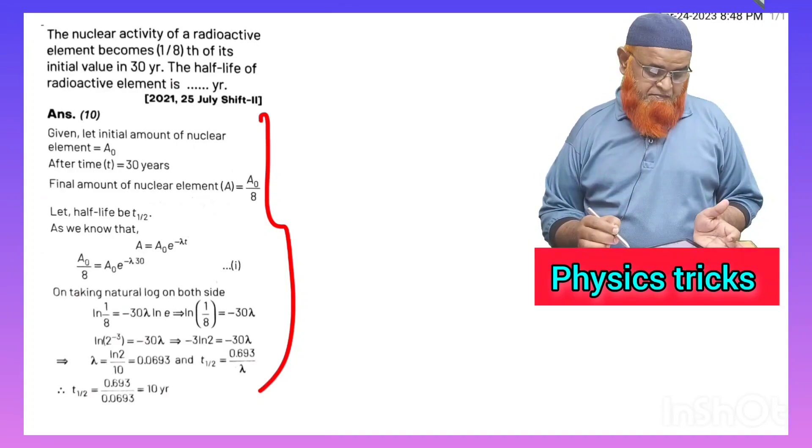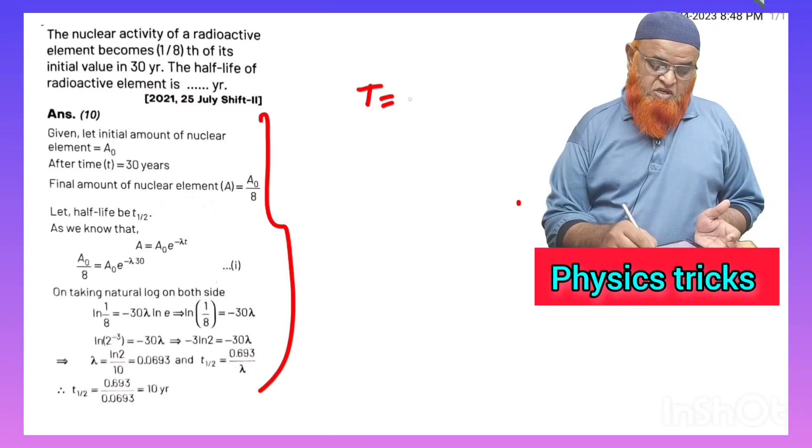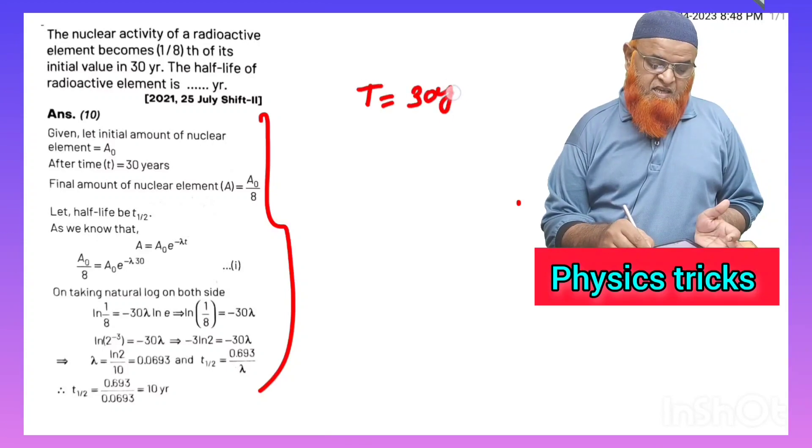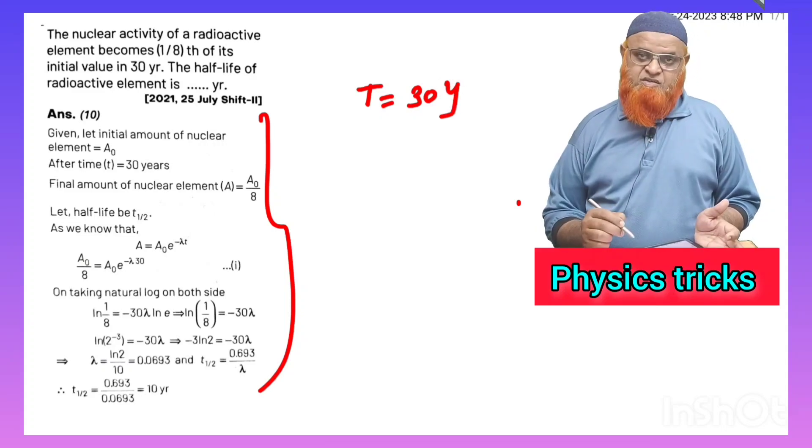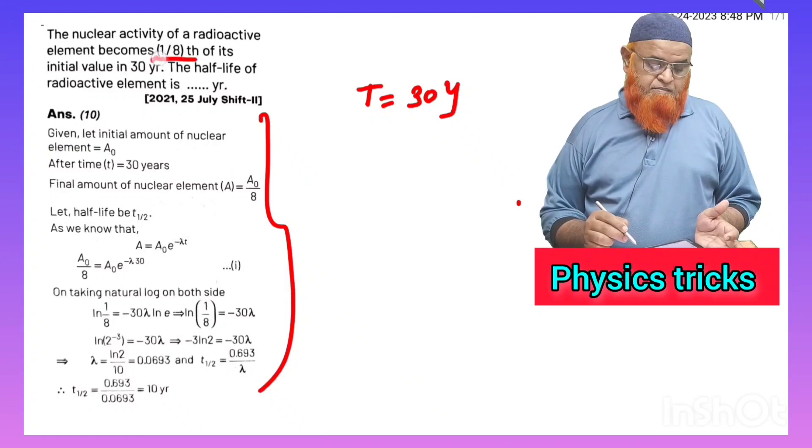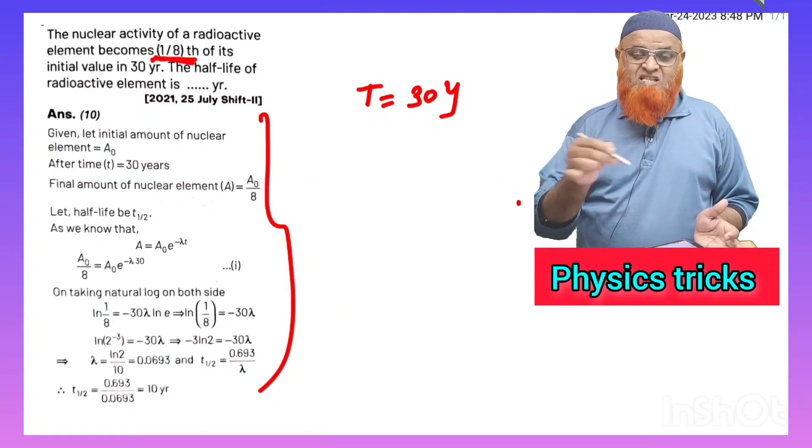And see the problem here. Total time is given to us, total time is taken as T which is 30 years. So 1/8, 1/8 of the material is left. This means what is the number of half-lives? How many half-lives are there?